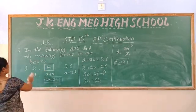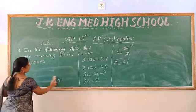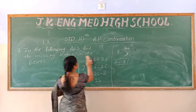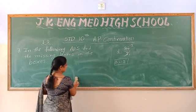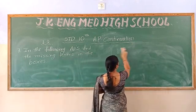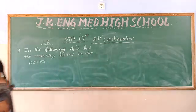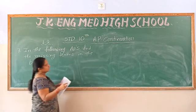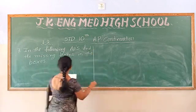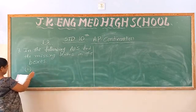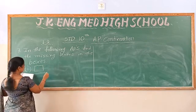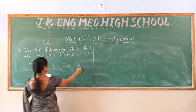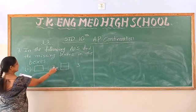Now I am going to write the second question. The second question has a first blank, and we know the second term, third term, and fourth term. So we can find out these two blanks. This is an AP.